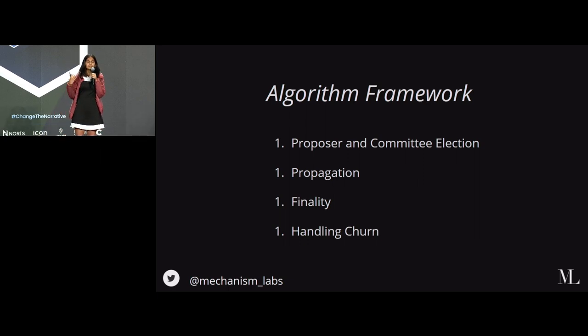And finally, it's this property of handling churn. Which basically means, are the different people who are part of your network capable of leaving and joining as they please, when they please? If you think of Bitcoin, for example, any of the miners can join in and be part of the protocol at any given point of time. And they can also leave at any given point of time. But that's not necessarily true of very different proof-of-stake protocols.